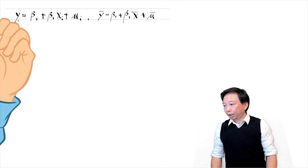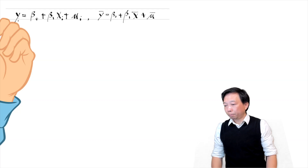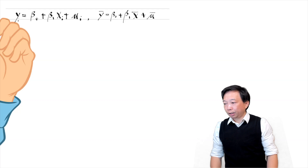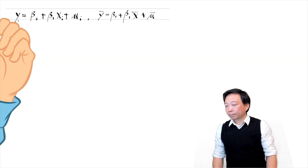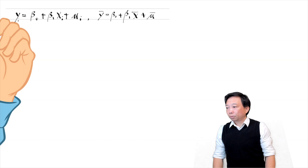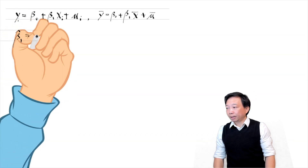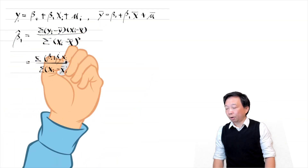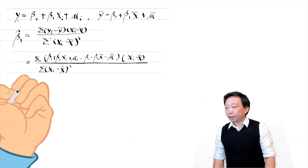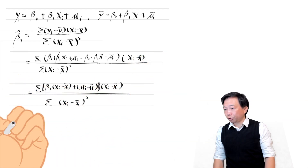Suppose the population relationship between y and x is y equals beta 0 plus beta 1 times x plus mu. The average y bar can be written as beta 0 plus beta 1 times x bar plus mu bar. Here y is the outcome or dependent variable, x is the explanatory or independent variable, and mu is the error term or disturbance. In video number 5, we derived the OLS slope estimator beta 1 hat. We plug in the expressions of yi and y bar and write beta 1 hat in terms of the population coefficient and error terms.